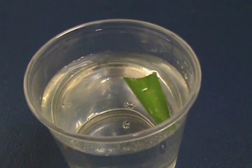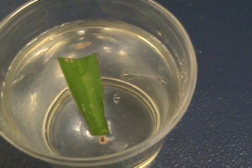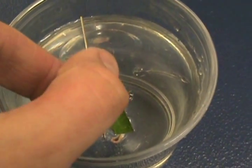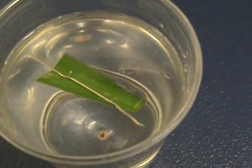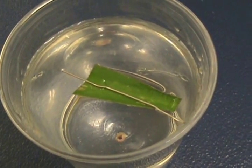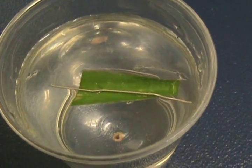Then we put the magnetized paper clip on top of the leaf. The leaf with the paper clip on it will turn to point north, just like a compass.